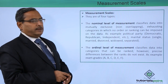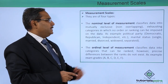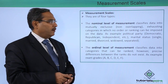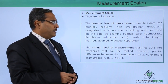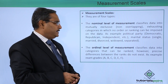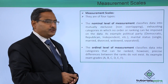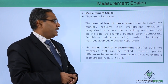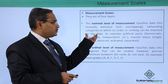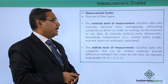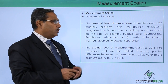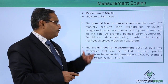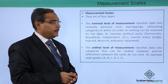There are 4 different types. The first type is the nominal level of measurement, which classifies data into mutually exclusive, non-overlapping, and exhaustive categories in which no order or ranking can be imposed on the set of data.